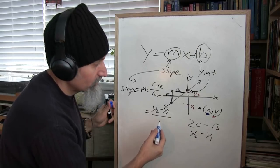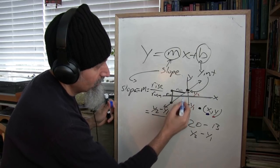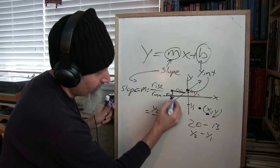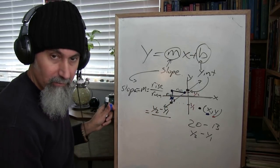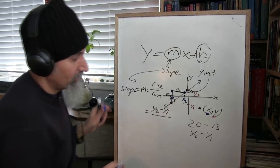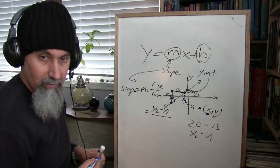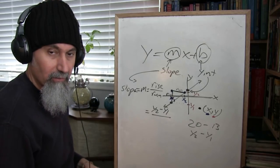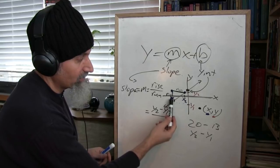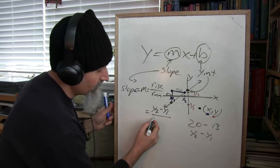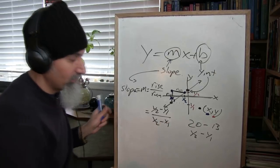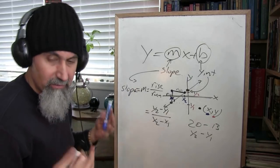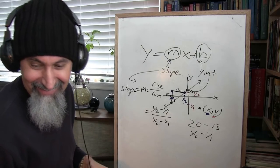So the slope formula is rise over run. The rise is y2 minus y1, and the run is x2 minus x1. This is the slope formula — you did this like four years ago. So easy, and it will come back because it's in your memory.